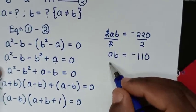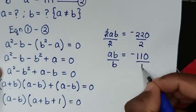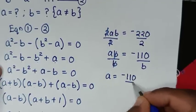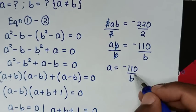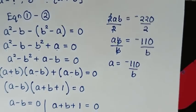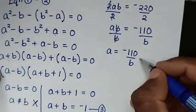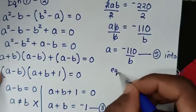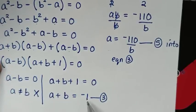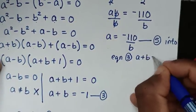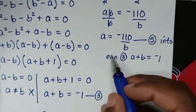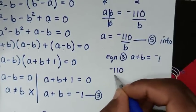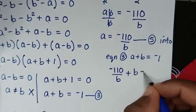We make a the subject by dividing both sides by b, giving a equals negative 110 divided by b. We call this equation 5. Substituting equation 5 into equation 3 — which is a plus b equals negative 1 — we get negative 110 over b plus b equals negative 1.